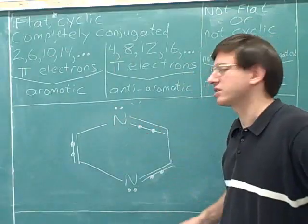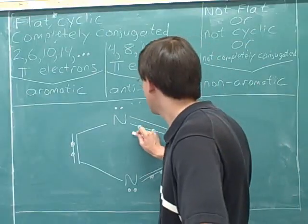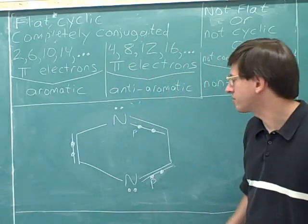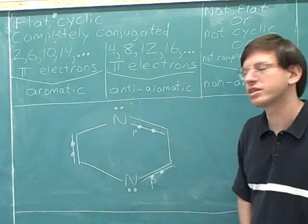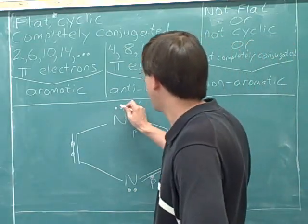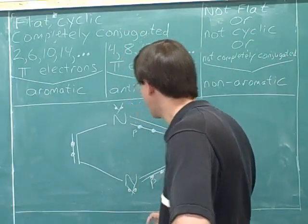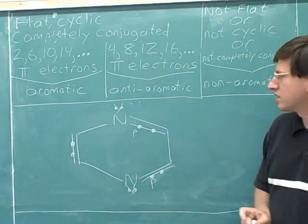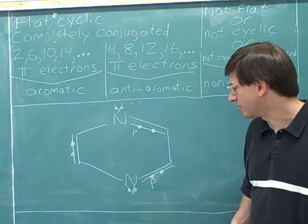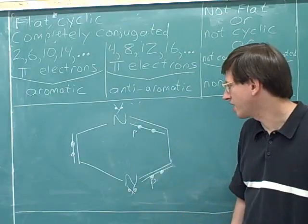Both of these nitrogens have already used their p orbital for their pi bonds. They've both already used the p orbital for the pi bonds, so they can't put the lone pair in p orbitals. So I'll cross those lone pairs out, because those cannot be pi electrons, because the p orbital has already been used up.